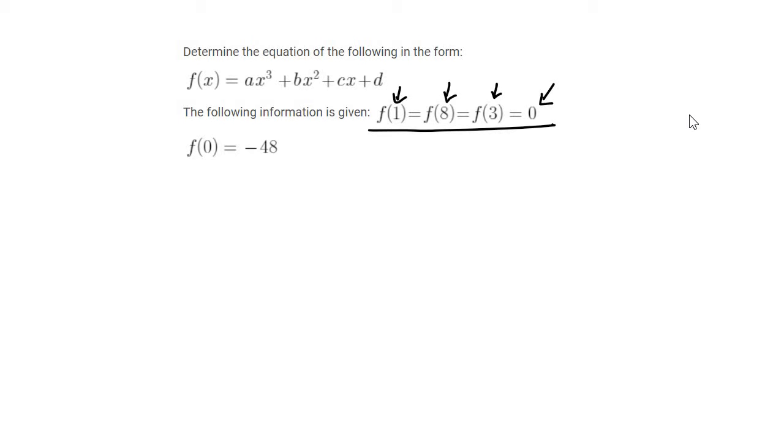Where on a graph is the y value 0? Well done if you realize that that's on the x axis. And so these three are actually the x intercepts on the graph.